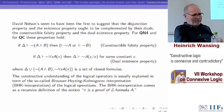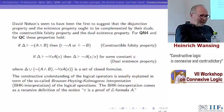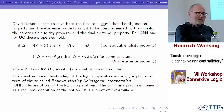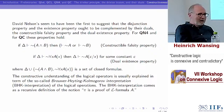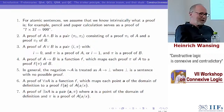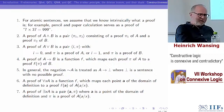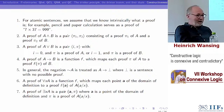David Nelson seems to have been the first to suggest that the disjunction property and existence property are not enough — they ought to be complemented by their duals: the constructible falsity property and the dual of the existence property. For first-order Nelson's logic, these properties indeed hold. If the negation of A and B is provable, then not-A is provable or not-B is provable. And if the negation of 'for all x' is provable, then the negation of A with c for x is provable for some constant. There is thus a clear sense in which Nelson's first-order logic is more constructive than intuitionistic first-order logic.